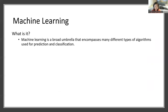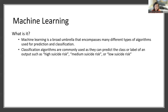One of the hallmark characteristics of machine learning is its ability to handle and analyze incredibly complex data in order to, for example, make classifications. This is particularly useful for diagnoses or predictions.